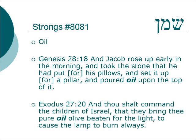Exodus 27.20: And thou shalt command the children of Israel that they bring the pure olive oil, beaten for the light, to cause the lamp to burn always. Most of the oil we see in Tanakh is olive oil, though there are other kinds, such as oil with myrrh. This olive oil is used for many things, including providing energy for the lamps to bring light.